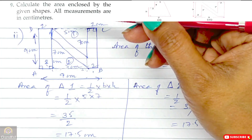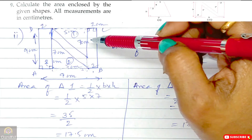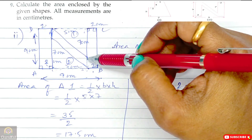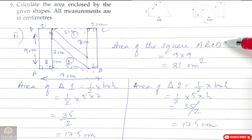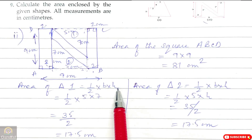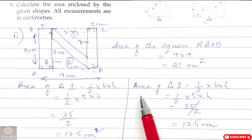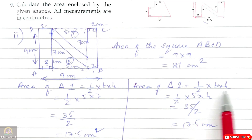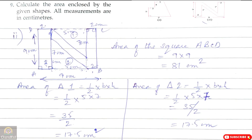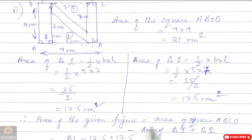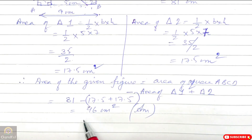Triangle base = 5 cm and height = 7 cm for both triangles. Area of square ABCD = 9 into 9 = 81 cm square. Area of triangle 1 = half into 5 into 7 = 17.5 cm square. Area of triangle 2 = half into 5 into 7 = 17.5 cm square. Hence area of figure N = 81 minus (17.5 + 17.5) = 81 minus 35 = 46 cm square.